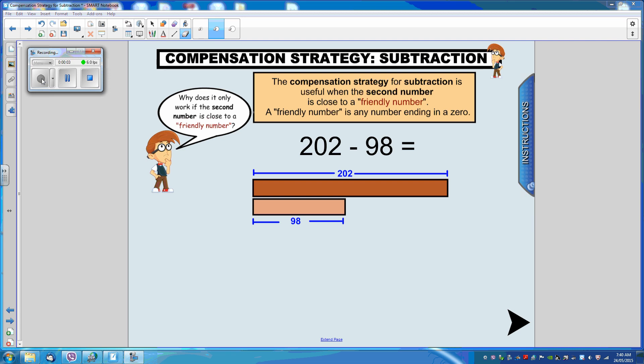Let's look at an example: 202 take away 98. Firstly, why does it only work if the second number is close to a friendly number? Both of these numbers are close to friendly numbers. So what are we going to do?